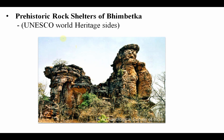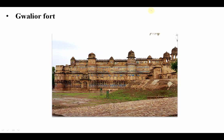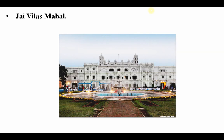The Prehistoric Rock Shelters of Bhimbetka — it is important, you need to remember it is in MP and it is also a UNESCO World Heritage Site. Gwalior Fort, as its name suggests, is in Gwalior, Madhya Pradesh. Jai Vilas Mahal is also in Madhya Pradesh. Note that there is a Lakshmi Vilas Palace in Gujarat, but Jai Vilas Mahal is in Madhya Pradesh.